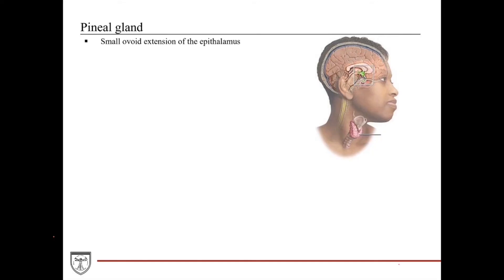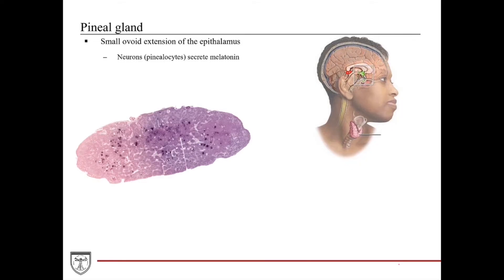The pineal gland is a small ovoid organ that extends out from the epithalamus. Similar to the posterior pituitary, the pineal gland is an extension of the epithalamic neural tissue and is comprised of numerous neurons, specifically called the pinealocytes, that synthesize and secrete melatonin. The neuron cell bodies are physically located and are isolated to the epithalamus.